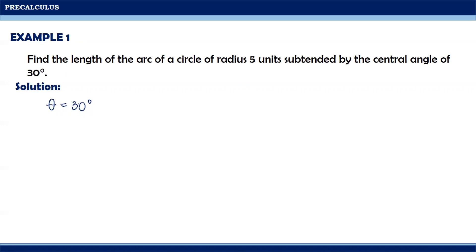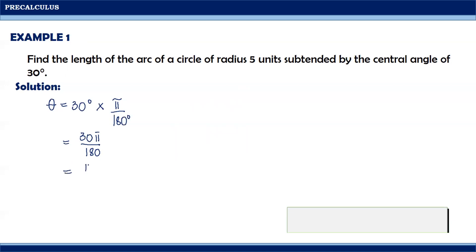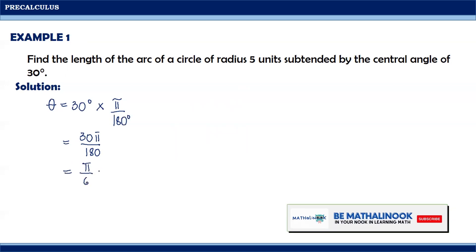Therefore, we still need to convert 30 degrees into radian measure. To do that, we will multiply 30 degrees by pi over 180 degrees. So, we will have 30 pi over 180, and writing 30 over 180 in lowest terms, we will have pi over 6 radians.